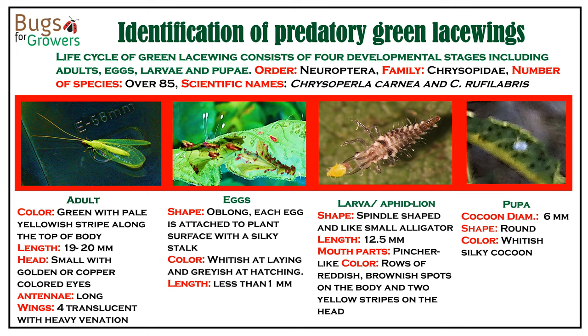The identification of predatory green lacewings is very easy. As shown in the photograph, their adults are very small, about 20 mm long, and they have a pale yellow colored body. They have small heads with golden or copper colored eyes and they have bright green colored and transparent wings with heavy venation.